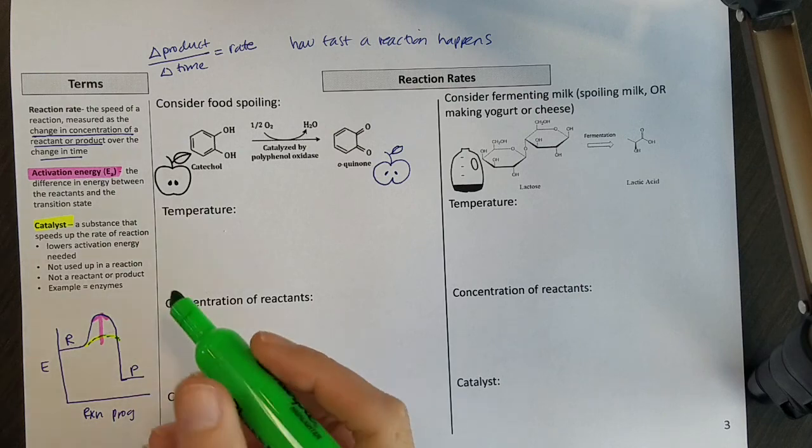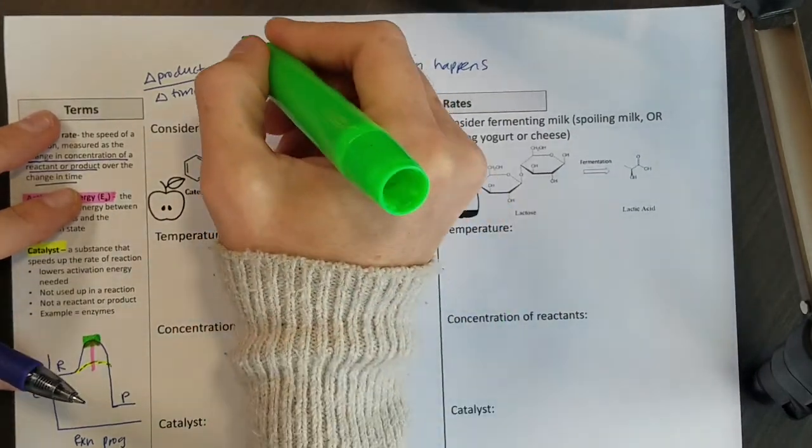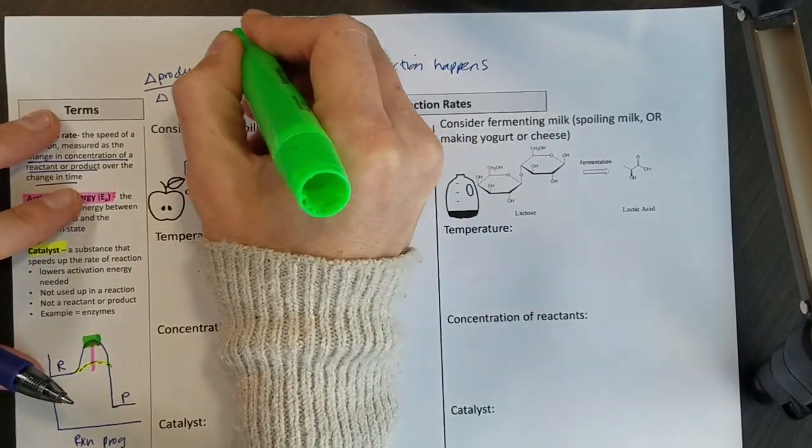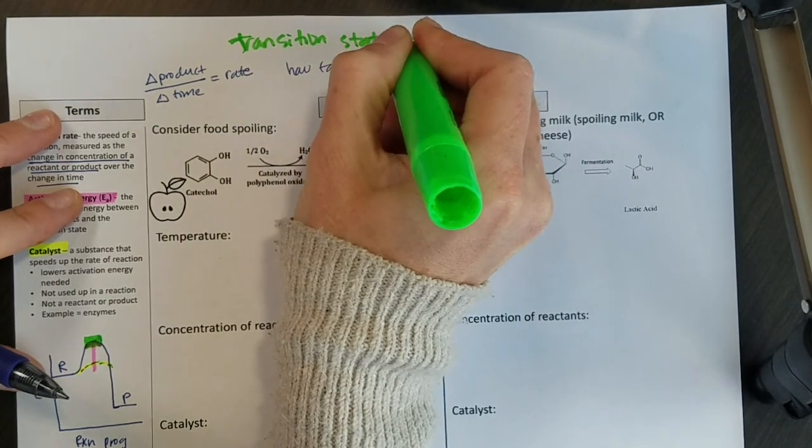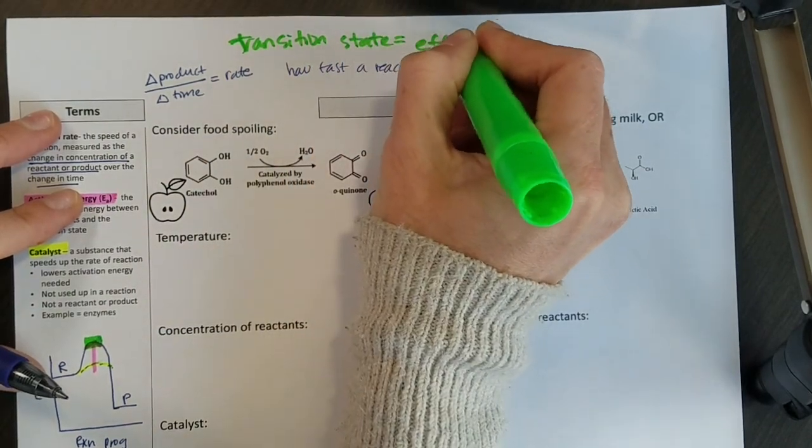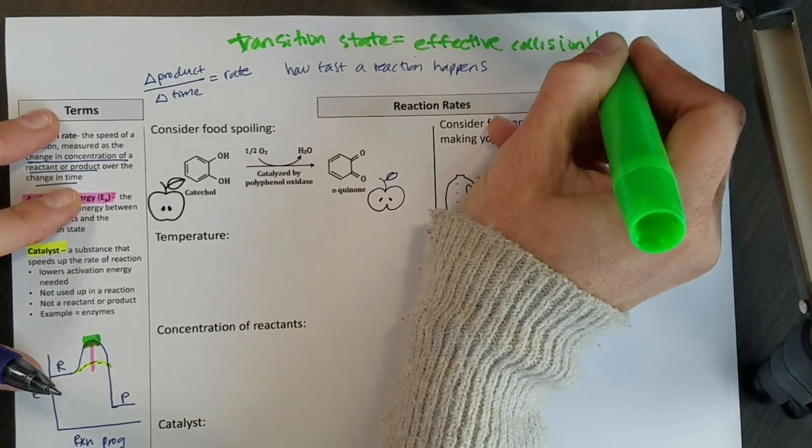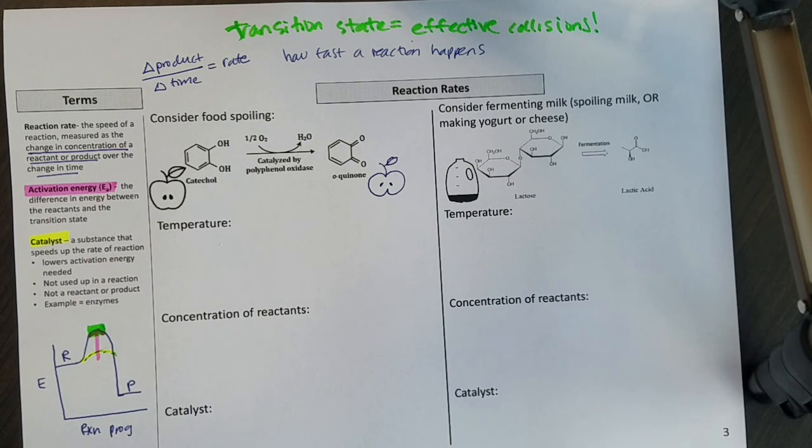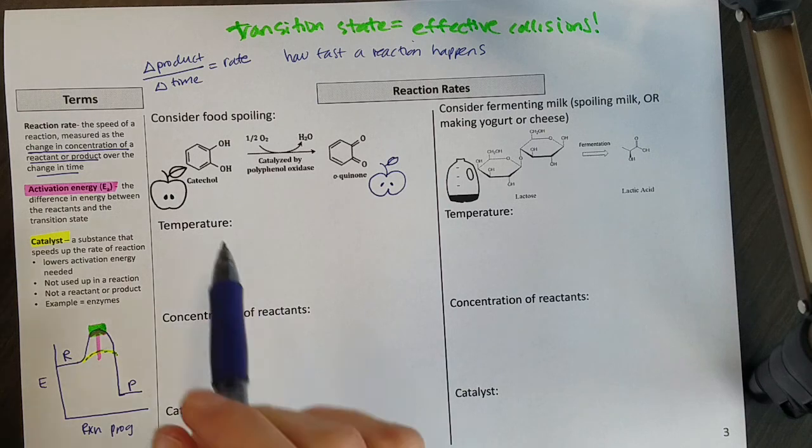One more piece with our energy diagram: up at the top here, we had our transition state, and our transition state is important because it was the same as having effective collisions between molecules, and the more collisions that we have, the faster the reaction is going to go. So we want to think about colliding molecules as we work on this page.